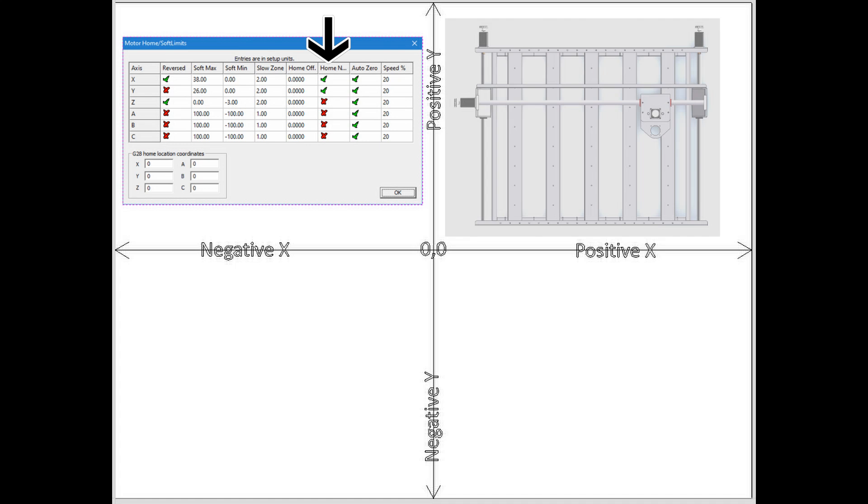You'll also notice that the values in the soft max are positive 38 inches in the x, 26 inches in the y. The z-axis remains the same with the negative value in the soft min column. This is because you always want the z-axis to home in the positive direction and raise up and not go down into the table.